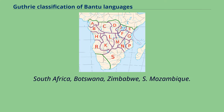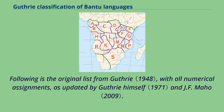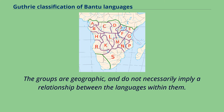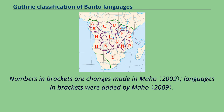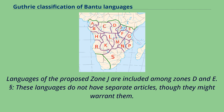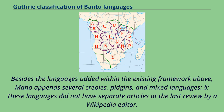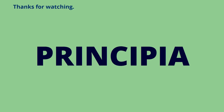Zone S covers South Africa, Botswana, Zimbabwe, and southern Mozambique. Following is the original list from Guthrie, with all numerical assignments, as updated by Guthrie himself and J.F. Maho. The groups are geographic and do not necessarily imply a relationship between the languages within them. Words in parentheses are added for disambiguation; numbers in brackets are changes made in Maho, and languages in brackets were added by Maho. Languages of the proposed Zone J are included among Zones D and E. Besides the languages added within the existing framework, Maho appends several creoles, pidgins, and mixed languages.